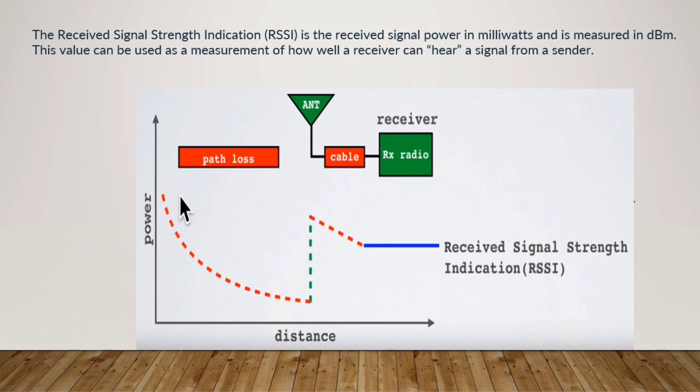So what is RSSI? RSSI is the received signal power in milliwatts and it's measured in dBm. The value can be used as a measurement of how well we receive a signal from a sender.